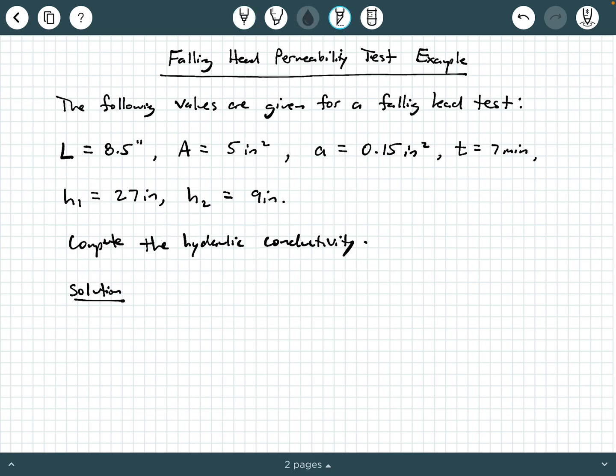We are being told that the following values for a falling head permeability test are given as the specimen length being 8.5 inches, the specimen cross-section area is 5 square inches, the standpipe cross-section area is 0.15 square inches, the duration of the water collection is 7 minutes, the initial head h1 is 27 inches and the final head is 9 inches. If you remember, these two heads are measured from a piezometer that's attached to the specimen.